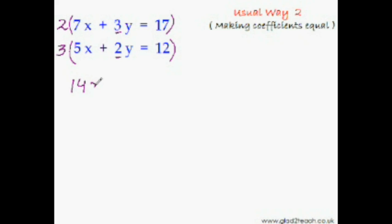Now just simplify it. 2 times 7x would be 14x, and 2 times 3y would be 6y, and 2 times 17 would be 34. Similarly, 3 times 5x would be 15x, and 3 times 2y would be 6y, and 3 times 12 is 36. Now, as you can see, we have managed to make one pair of coefficients equal.